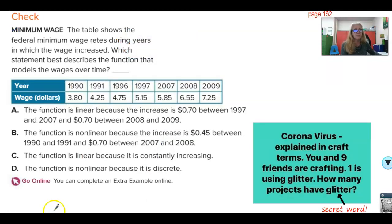And sometimes we're going to have information given in one of these horizontal tables. We're going to do the same thing with this that we did with the T-charts. We're going to check to see if the rate of change is the same. Here. Coronavirus. Explained in craft terms. You and nine friends are crafting. One is using glitter. How many projects have glitter? Glitter. Well, teachers, glitter is kind of a teacher thing because custodians hate glitter. And if we use glitter in our classroom, they're cleaning glitter up for months. If one person uses glitter, glitter is on everything. And you'll find that out when you start going to your dances in high school. You're like homecoming and your girlfriend, she's got like glitter on her dress or something. It'll be all over your car. You'll never get it out. But anyway, glitter is the secret word for this video. Let's go ahead and finish this problem. This is the last problem in this video.